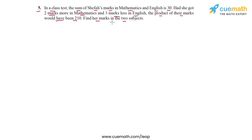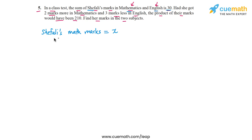The unknowns in this situation are Shefali's marks in math and English. Let's assume one of the two unknowns to be x — let's say Shefali's math marks are x. Because the sum of her marks in math and English is 30, her English marks will be 30 minus x.